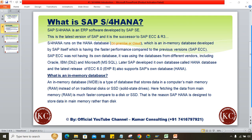Now, what is an in-memory database? An in-memory database — also called IMDB — is a type of database that stores data in the computer's main memory, which is RAM (Random Access Memory), instead of the traditional disk such as a hard disk or SSD. Fetching data from main memory is much faster compared to a hard disk.